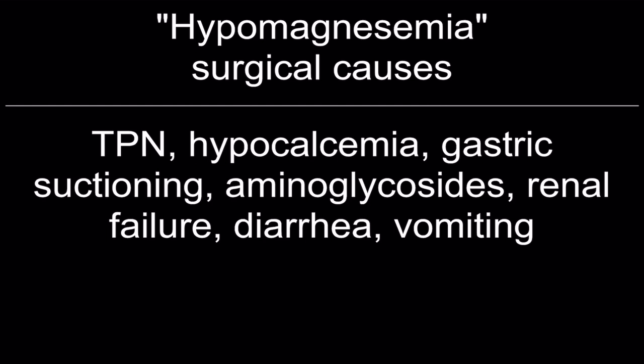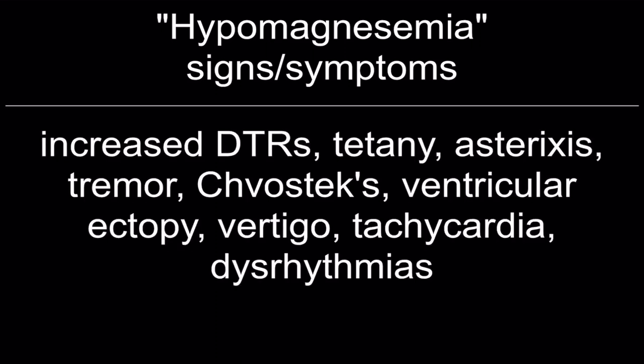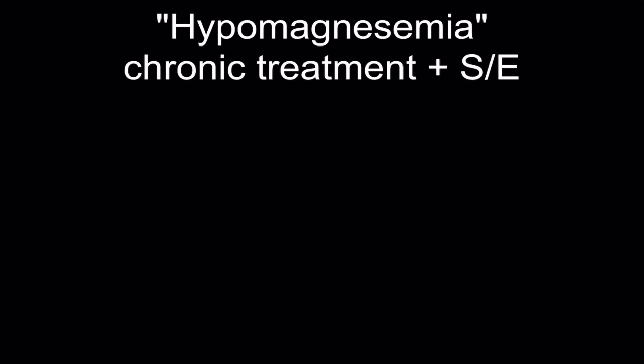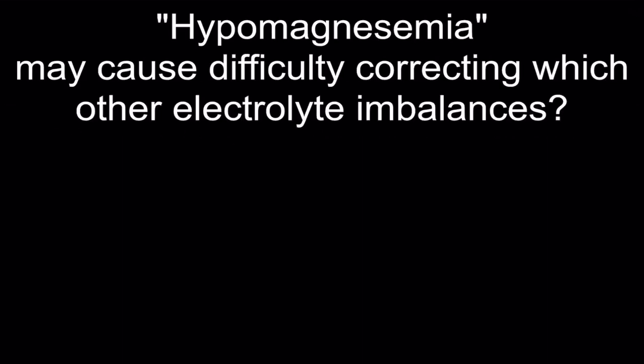Surgical causes of hypomagnesemia: total parenteral nutrition, hypocalcemia, gastric suctioning. Signs and symptoms: increased deep tendon reflexes, tetany, asterixis, tremor, Chvostek sign, ventricular ectopy, vertigo, tachycardia, and dysrhythmias. Acute treatment: IV magnesium sulfate. Chronic treatment: magnesium oxide by mouth, which may cause diarrhea. Hypomagnesemia may cause difficulty correcting hypokalemia.